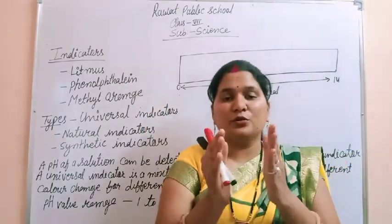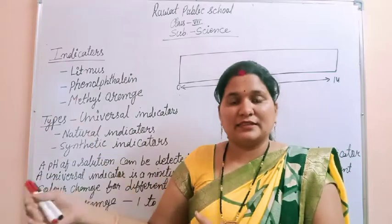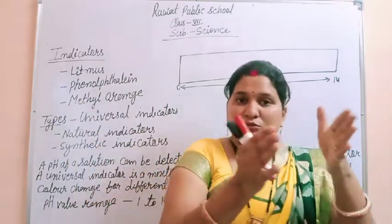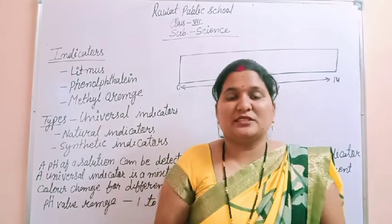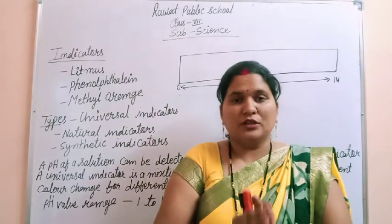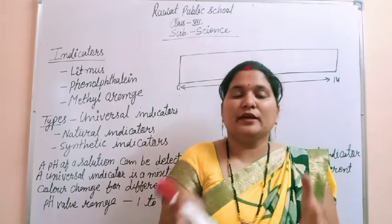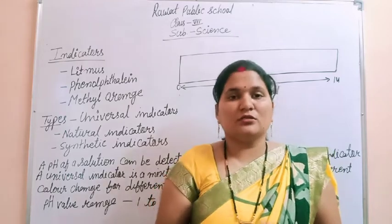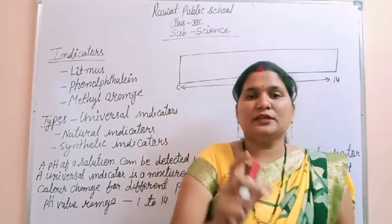Blue Litmus paper changes to red when it comes into contact with acid. And red Litmus paper changes to blue when it comes into contact with bases. If both red and blue Litmus papers are added to a solution and neither changes color, it means the solution is neutral — neither acidic nor basic in nature. These substances which help us identify acids and bases are called indicators.